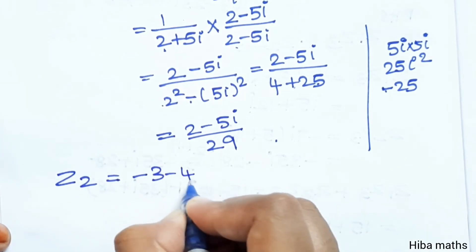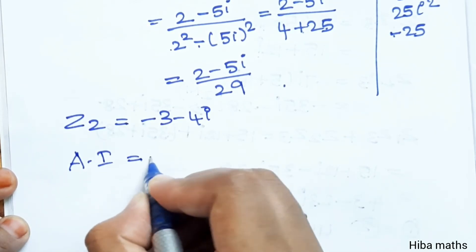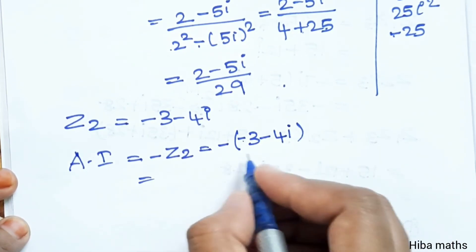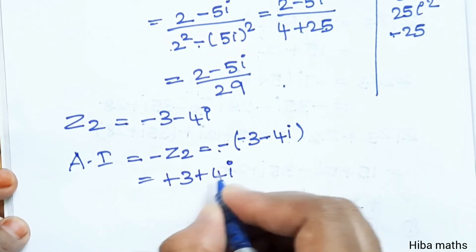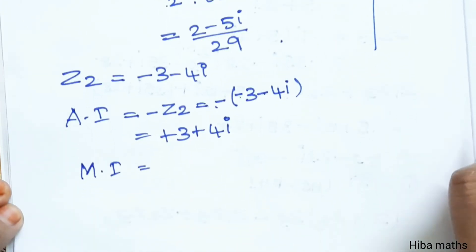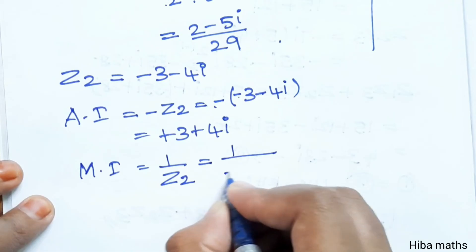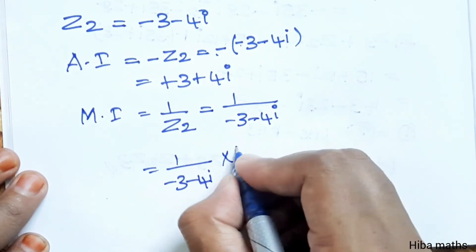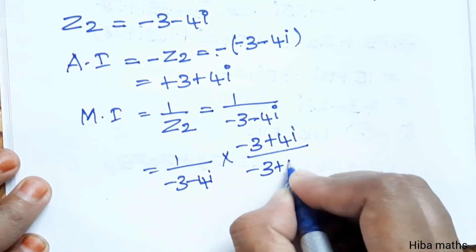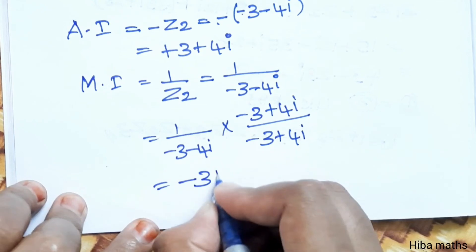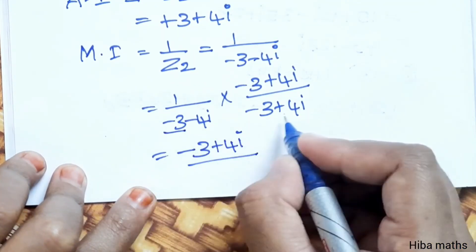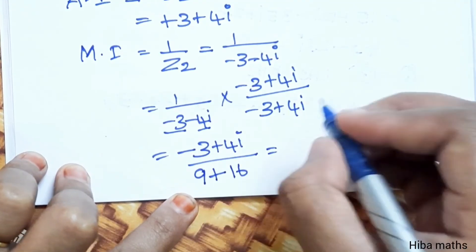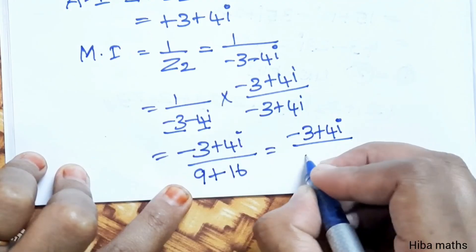For z2 equals minus 3 minus 4i: additive inverse is minus z2, which is minus of minus 3 minus 4i, giving plus 3 plus 4i. Multiplicative inverse is 1 by minus 3 minus 4i. Multiply by conjugate minus 3 plus 4i over minus 3 plus 4i. Denominator: minus 3 squared plus 4 squared equals 9 plus 16 equals 25. Answer: minus 3 plus 4i divided by 25.